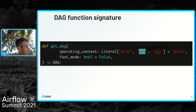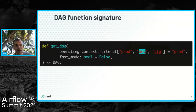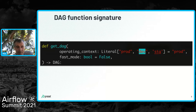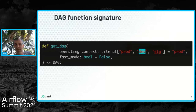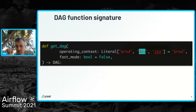If you're going to define an interface to your DAG and declare different operating contexts like prod, dev, and staging, it's a really nice thing to provide a function signature that's very clear about what it does. You could also add a docstring defining clearly what 'fast mode' means, what operating context means, and what it does to the DAG. That really enables the author of the DAG to give a clear signature and make it clear what's going to happen.